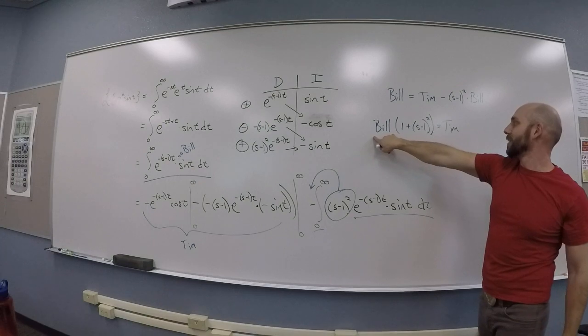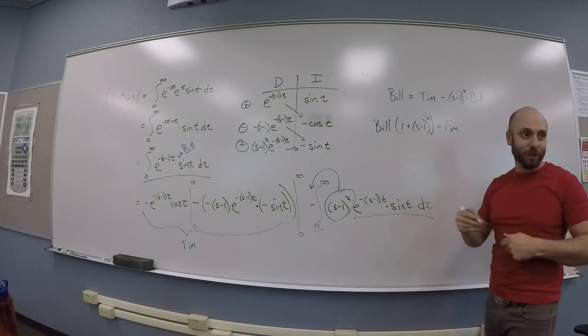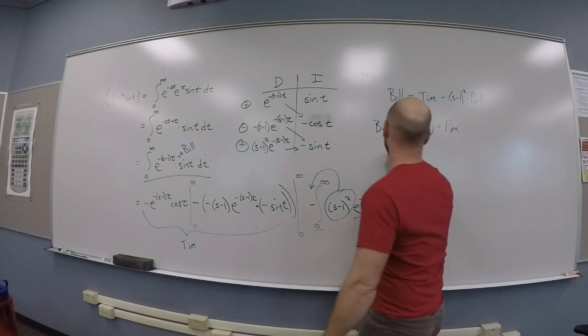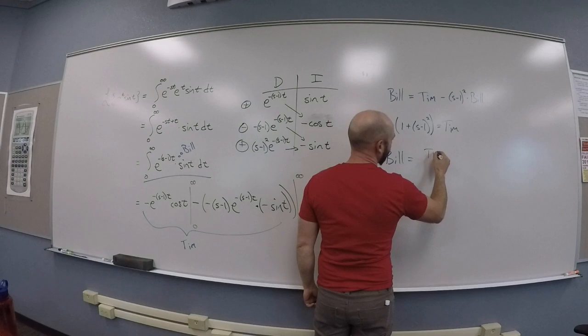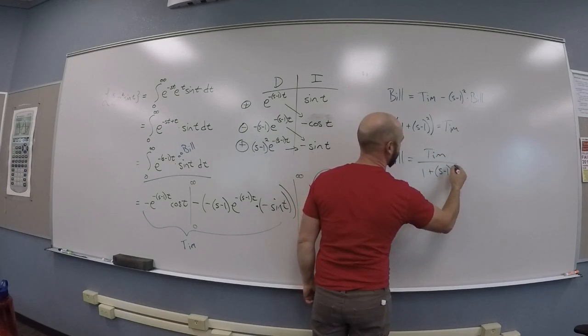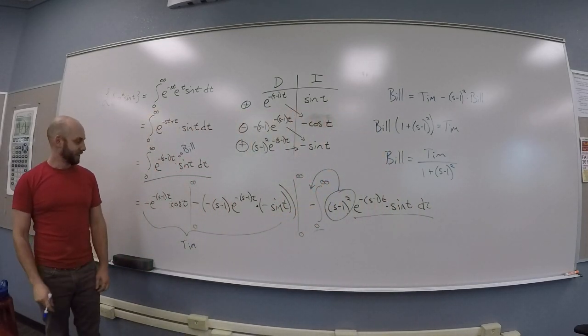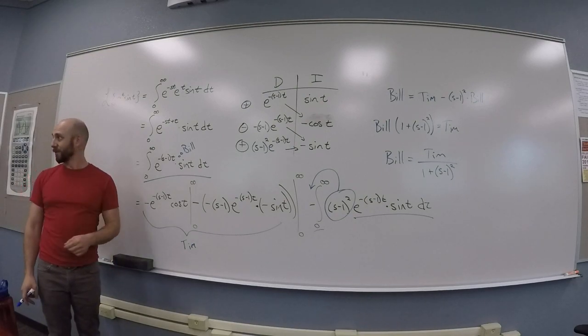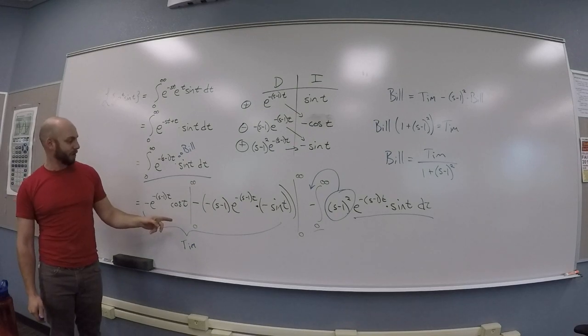So, I have Bill times this thing is Tim. So, Bill, of course, the thing I was looking for, right, is Tim over 1 plus S minus 1 squared. And then you just need to know what Tim is. So, there's a whole bunch of crap here, right? But you're like, all right.